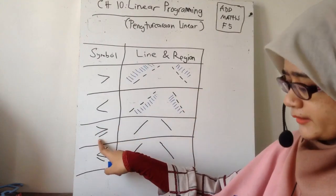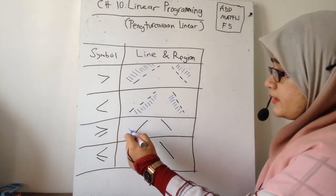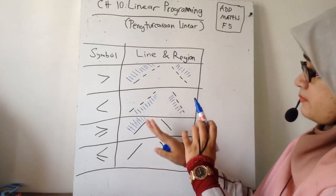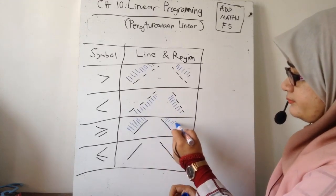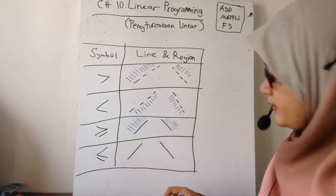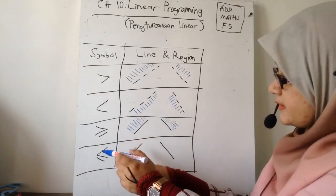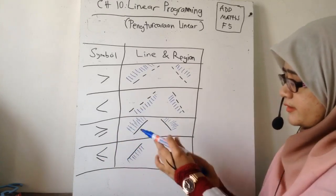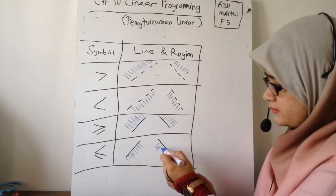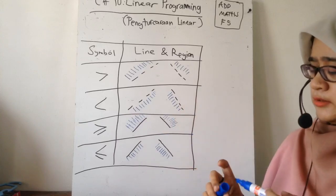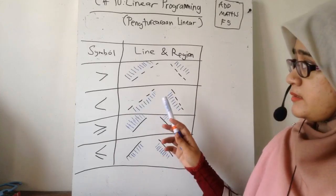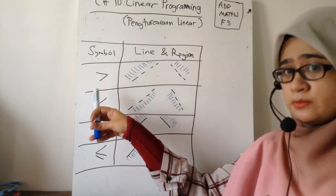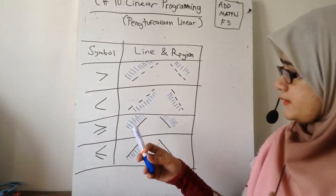Yang ni pun sama. Ni melambangkan lebih besar dan sama, so ni dia akan lorekkan bahagian atas. Yang ni pun atas dan bawah, so ni bahagian atas. Yang ni lebih kecil dan sama, jadi lebih kecil dan sama - yang ni besar, yang ni kecil - yang ni pun atas dia lebih besar, bawah dia lebih kecil. Jadi yang ni basic dia untuk line dan simbol ni, sebab nanti dia akan bagi ayat, kita akan translatekan dalam bentuk simbol dan kita kena lukis graf.